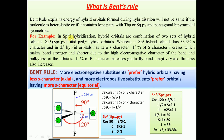Bent explained sp3d hybridization with trigonal bipyramidal geometry, finding two different hybrid orbitals: a combination of sp2 and pz·dz². In sp3d hybridization, you can see two different sets of energetic hybrid orbitals — sp2 and pz·dz². The sp2 hybrid orbitals contribute to the trigonal planar geometry, while pz·dz² contributes to the linear (axial) geometry. The sp2 hybridization has 33% s-character.